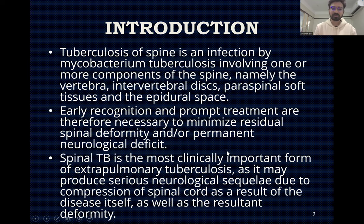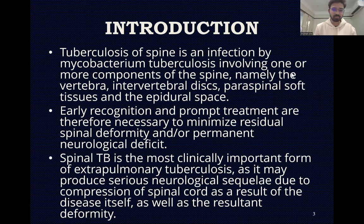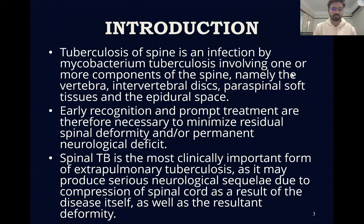Introduction: Tuberculosis of the spine is an infection by Mycobacterium tuberculosis involving one or more components of the spine, namely the vertebra, intervertebral disc, paraspinal soft tissues, and epidural space. Early recognition and prompt treatment are necessary to minimize residual spinal deformity or permanent neurological deficit. Spinal TB is the most clinically important form of extra-pulmonary tuberculosis as it may produce serious neurological sequelae due to compression of the spinal cord.